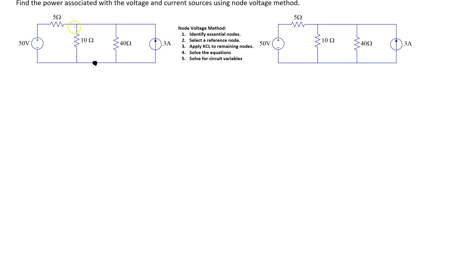Similarly, this top conductor is where four circuit elements are joining, so this is also an essential node. If we look at this point here, only two circuit elements are joining, so this is a node but it is not an essential node.